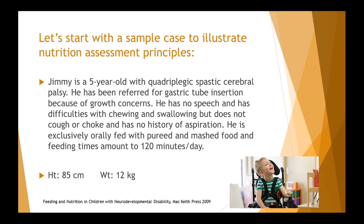Starting with a sample case study: Jimmy is a five-year-old with quadriplegic spastic cerebral palsy, referred for gastric tube insertion due to growth concerns. He has no speech, has difficulties with chewing and swallowing, but doesn't cough or choke and has no history of aspiration. He is fed exclusively orally, with feeding times approximately 120 minutes per day.